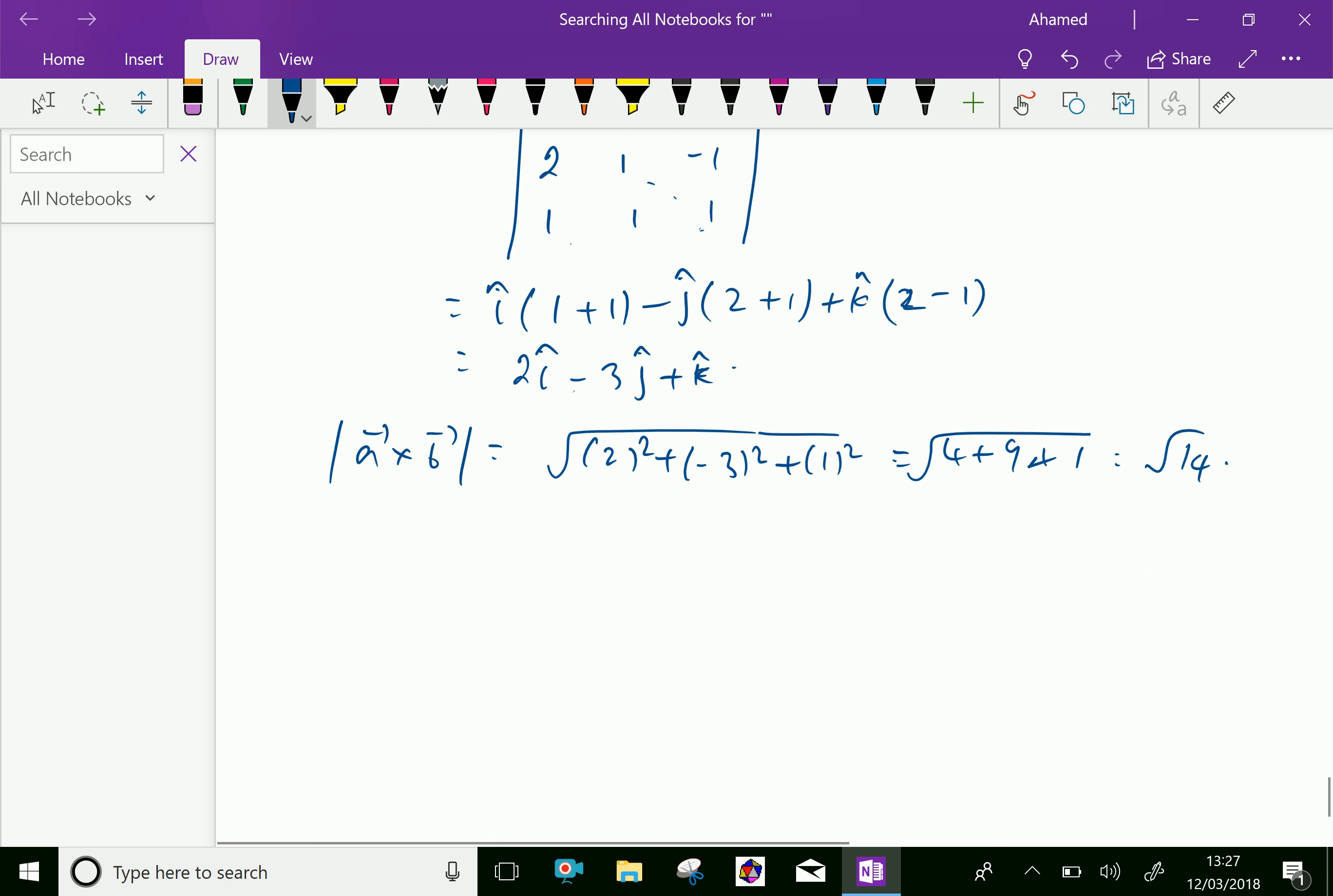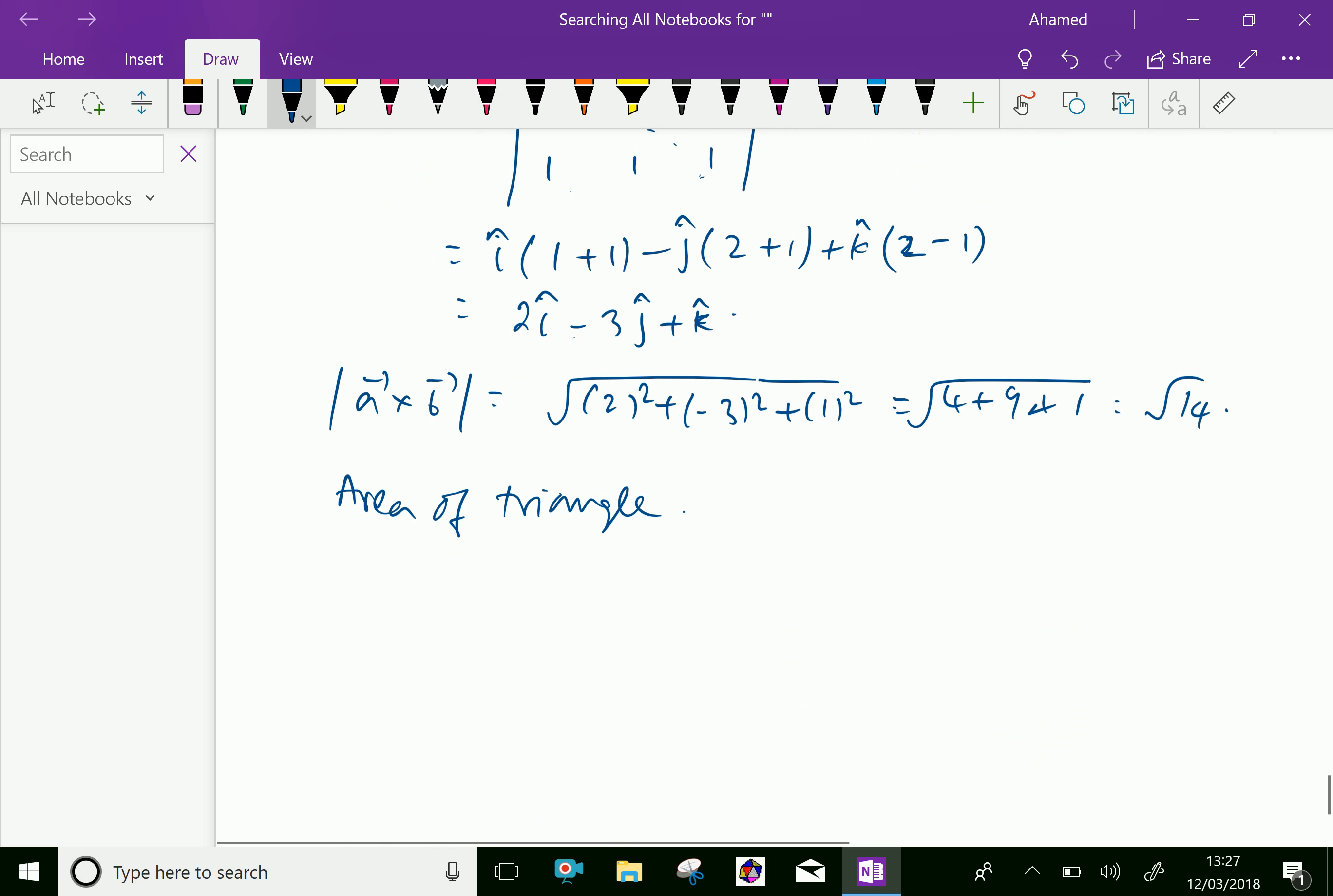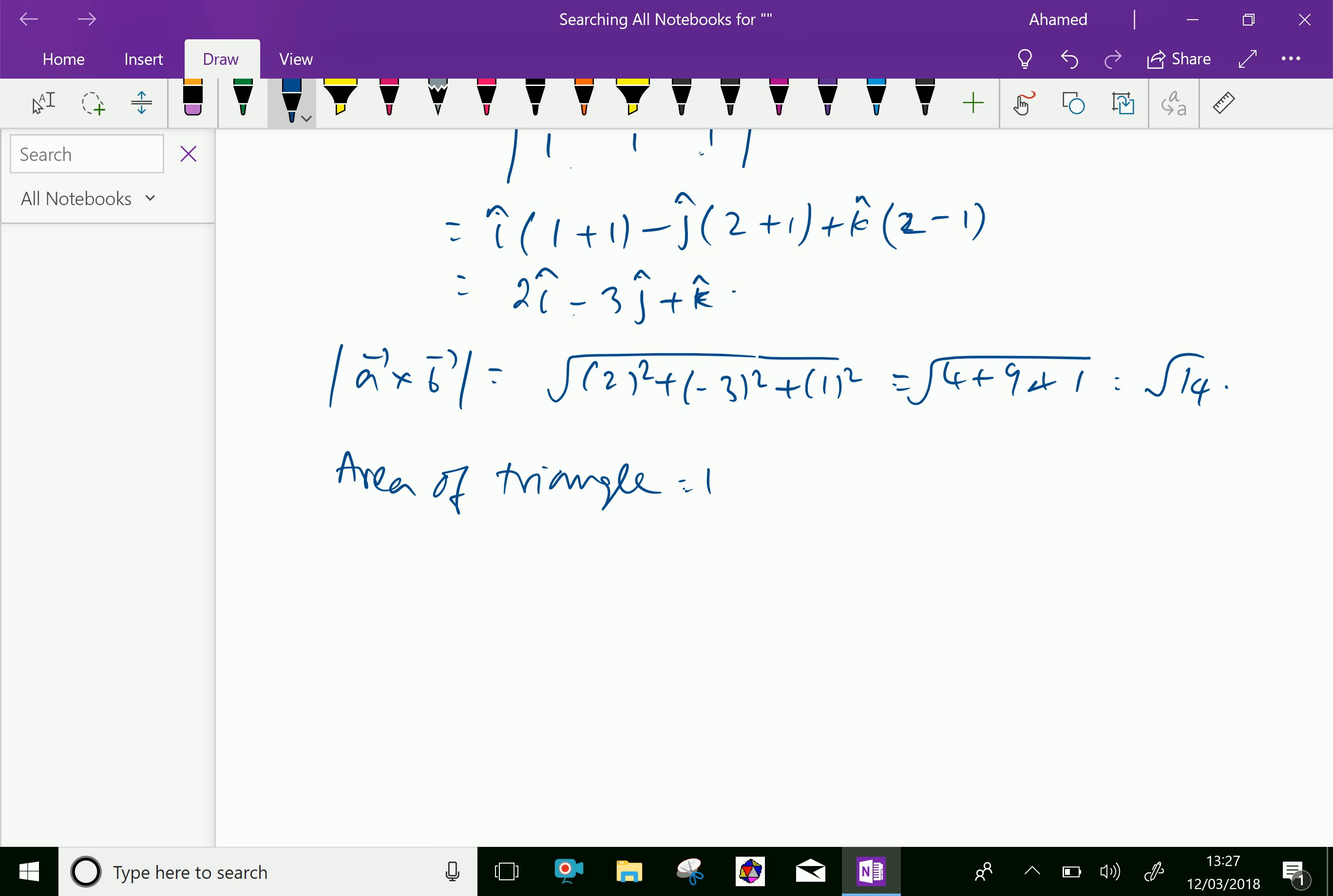Area of triangle is half of modulus A cross B equal half into square root of 14 square units.